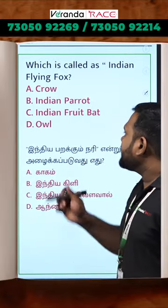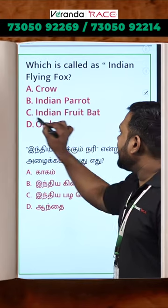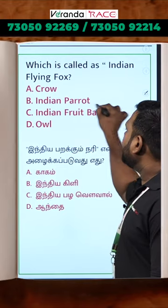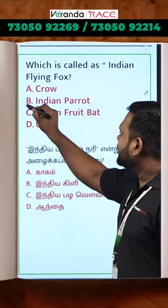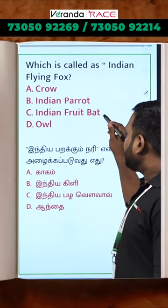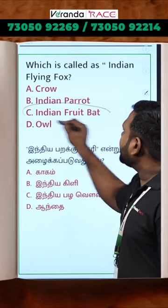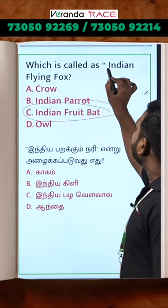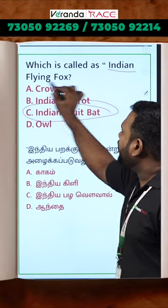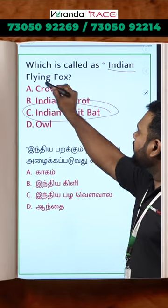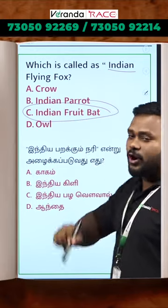Option C is the Indian Fruit Bat. The Indian Fruit Bat is also known as the Indian Flying Fox. So the answer is option C.